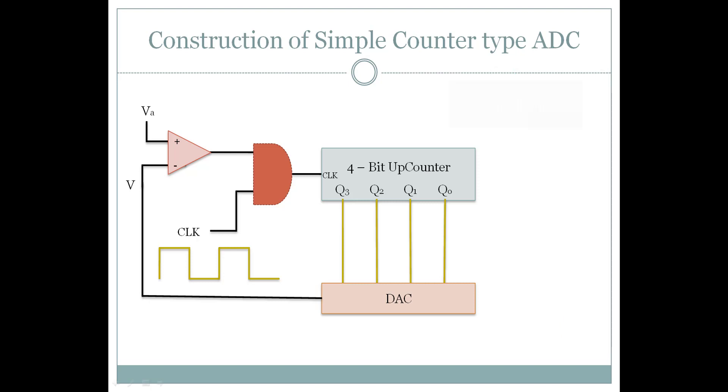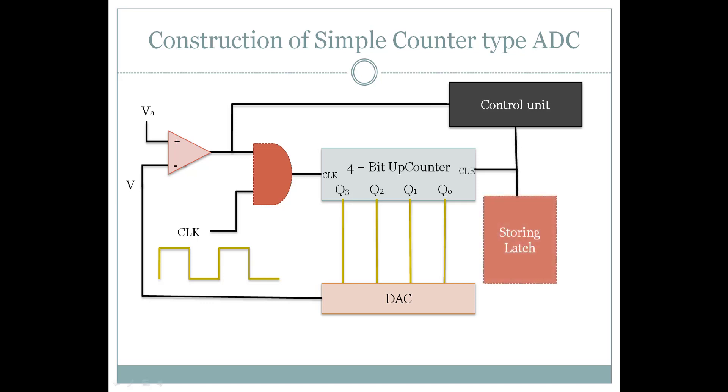A control unit observes all the outputs of the comparator. When the counting gets completed, a command is given to the latch to store the counter output and reset the counter. So the final simple counter type ADC block diagram will look like this.